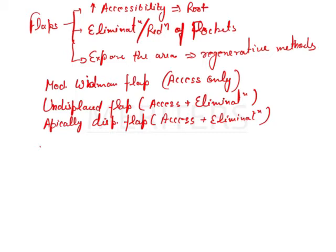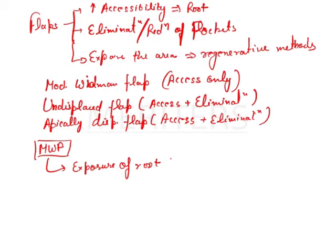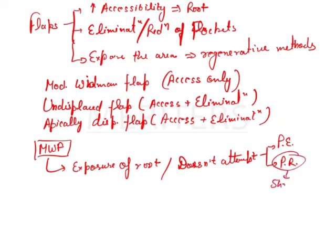Coming to the Modified Widman Flap specifically: it is generally intended at exposure of the root, so that you can remove debris, plaque, or calculus that is not easily cleanable. Getting direct access helps clean the roots properly. It does not attempt reduction of pocket depth. Although some reduction can be achieved, it is not intended — whatever reduction in pocket depth occurs is due to shrinkage only.